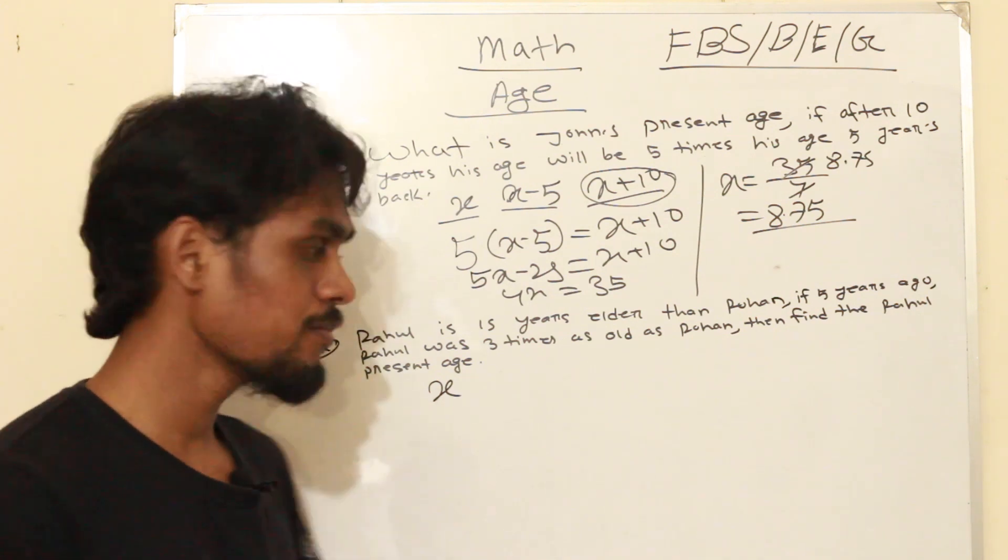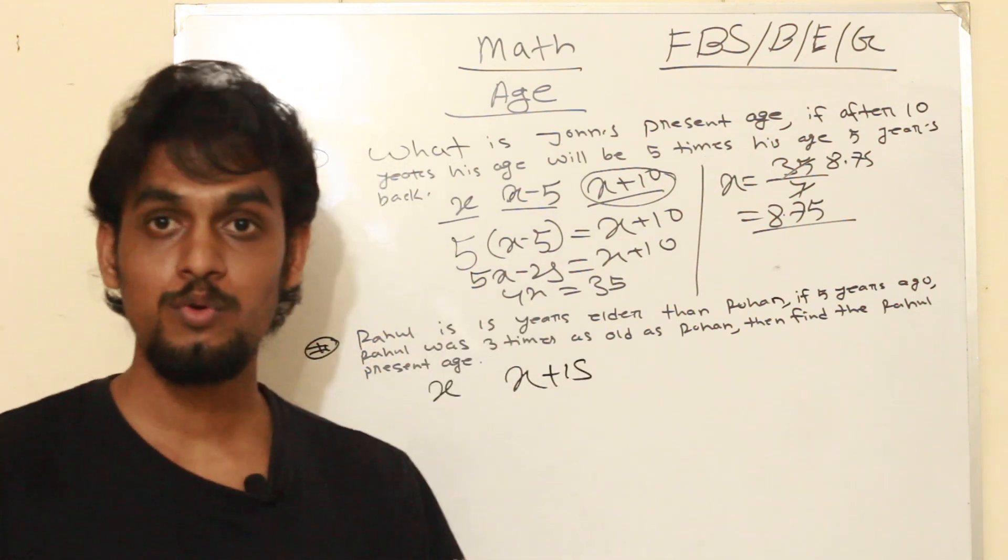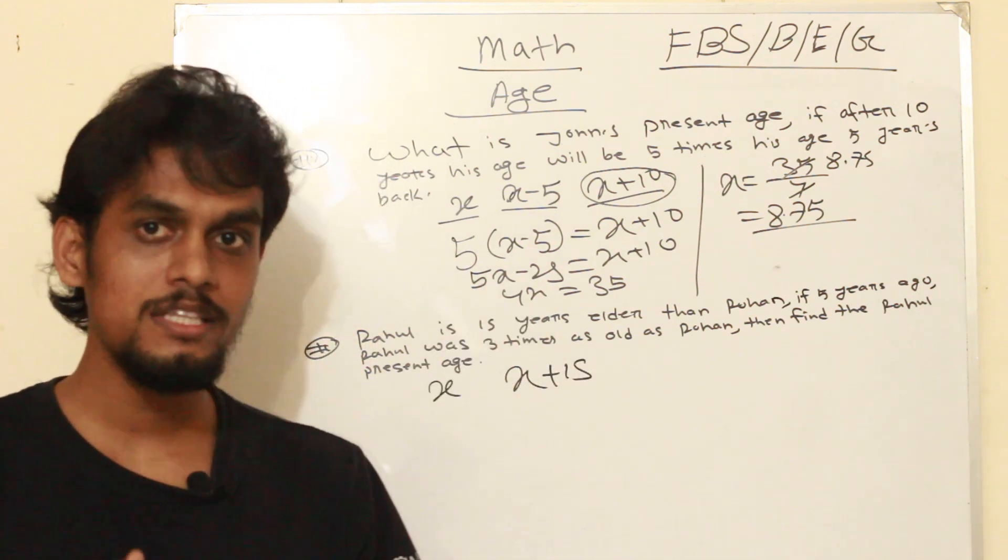The question says Rahul is 15 years older than Rohan. So if Rahul's present age is x, then Rohan's present age is x minus 15.